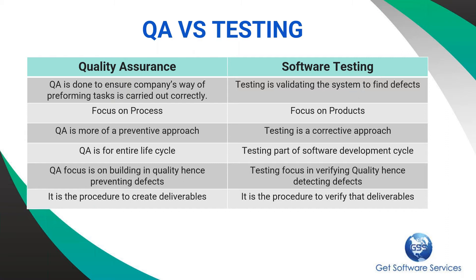Quality assurance is an ongoing activity — you do quality assurance throughout the entire life cycle, checking through each and every stage of software development to ensure the process is correct. Whereas testing is something that we do once the software is ready — once the software is ready, we test it. Quality assurance focuses on the process and prevents defects, whereas testing finds defects in the software.